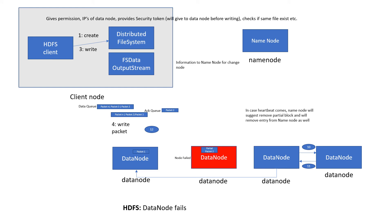The client will talk to the distributed file system, which will communicate to the name node. The name node will do all kinds of validation checks, and if everything goes well, it will permit the operation. Then the FS data output stream will come into the picture and send packets via the data queue to the data node. Data node one will create a dedicated pipeline with data node two, but data node two is a failed node — during the write, it got failed. Once it fails, it will immediately send information to the queue.